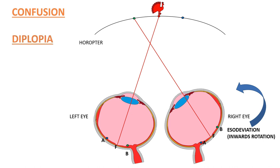The second manifestation of squint is diplopia, which is symptomatically much more troublesome than confusion. Technically diplopia means double vision, but in the context of squint it means one single object being perceived as two separate objects due to the misalignment of the eyes. Confusion happens because corresponding retinal points of both eyes see different objects; diplopia is exactly the opposite — diplopia happens because non-corresponding retinal points see the same object. In this example, the fovea of the left eye and the misaligned point A of the right eye are both seeing the peacock. To understand how diplopia manifests, one concept — visual perception — needs to be well understood.